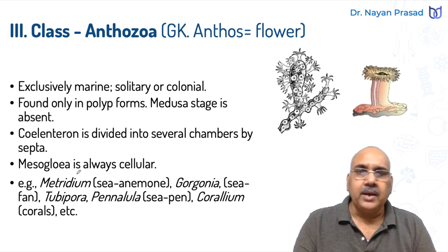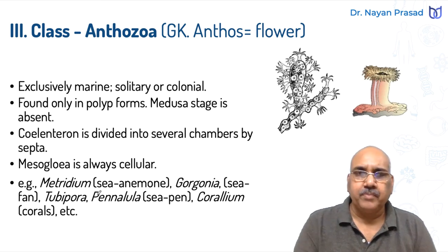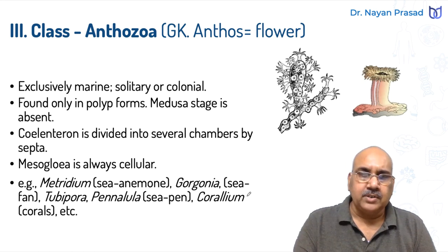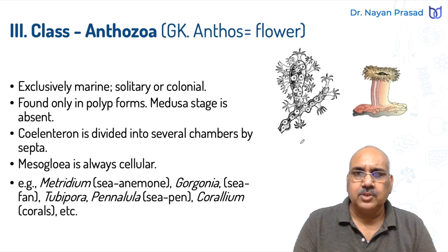Mesoglia is always cellular in Anthozoa. Examples include Metridium, which we call Sea Anemone; Gorgonia, called Sea Fan; Tubipora; Pennatula; and Coralium, which is called Corals.